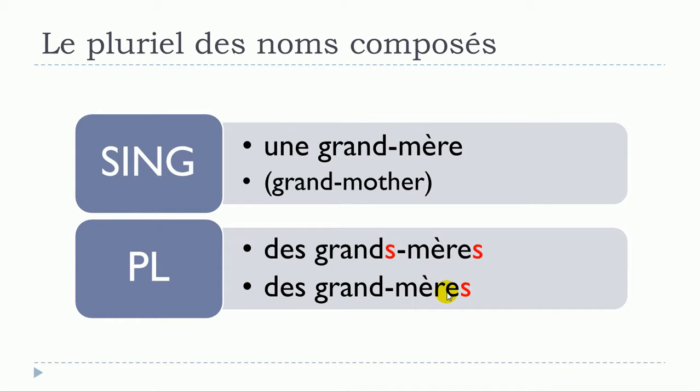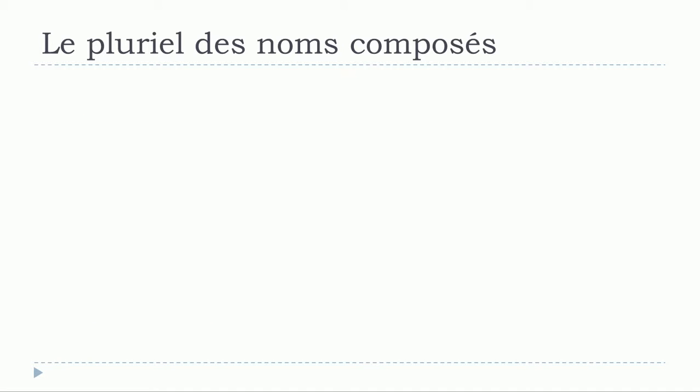So des grand-mères, as I said phonetically it's the same anyway because it will be une grand-mère, des grand-mères and then des grand-mères. Phonetically the same form but you've got to keep in mind that this is how it should be written correctly and in that case keep in mind that the two options are correct.